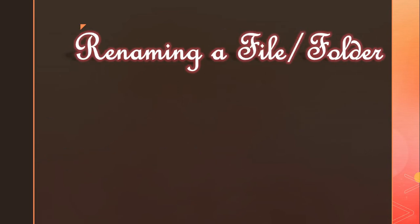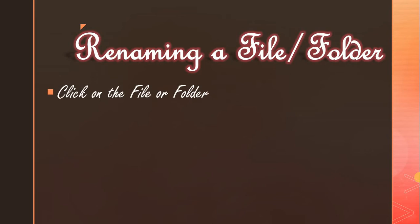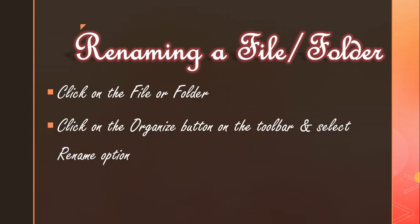Next, renaming a file or folder. You can change the name of an existing file or folder. To do that, select the file or folder that you want to rename, then click on the Organize button in the toolbar. A drop-down menu appears. Select the Rename option and type the new name, then press the Enter key. Your file or folder name will be changed.